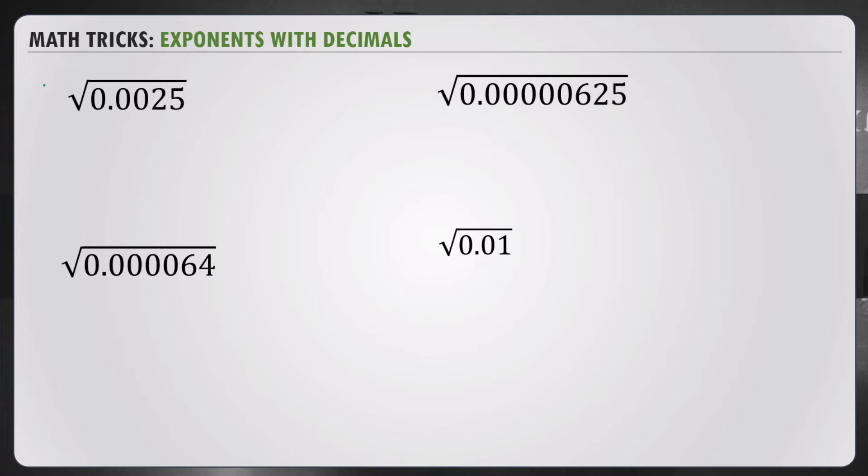Let's start with a simple one. 0.0025, what is the square root of it? Let's just take 25. The square root of 25, we know, is 5. Let's count the number of decimal places. That's 1, 2, 3, 4 decimal places. To get the square root of the number, we take 4 divided by 2 because it's a square root and your answer should now have 2 decimal places. So, your answer is 0.05. Simple as that.